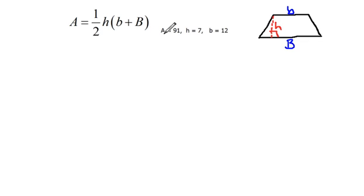So here we have, they've told us that A equals 91. So I'm going to replace A with 91. And then they've also told us that h equals 7. So I can replace the h with 7. And then they gave us that the small b is 12.